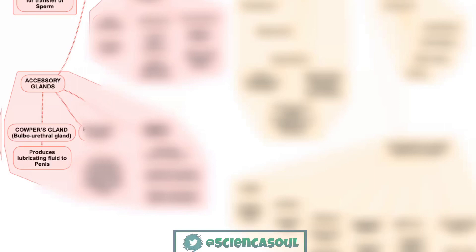The fourth part is accessory glands. There are three parts of accessory glands. The first is Cowper's gland, or bulbo-urethral gland, which produces lubricating fluid for the penis. The lining of these glands is made up of simple columnar epithelium and these are 2 in number. Their secretion helps in lubrication and they add only a small amount to the semen.